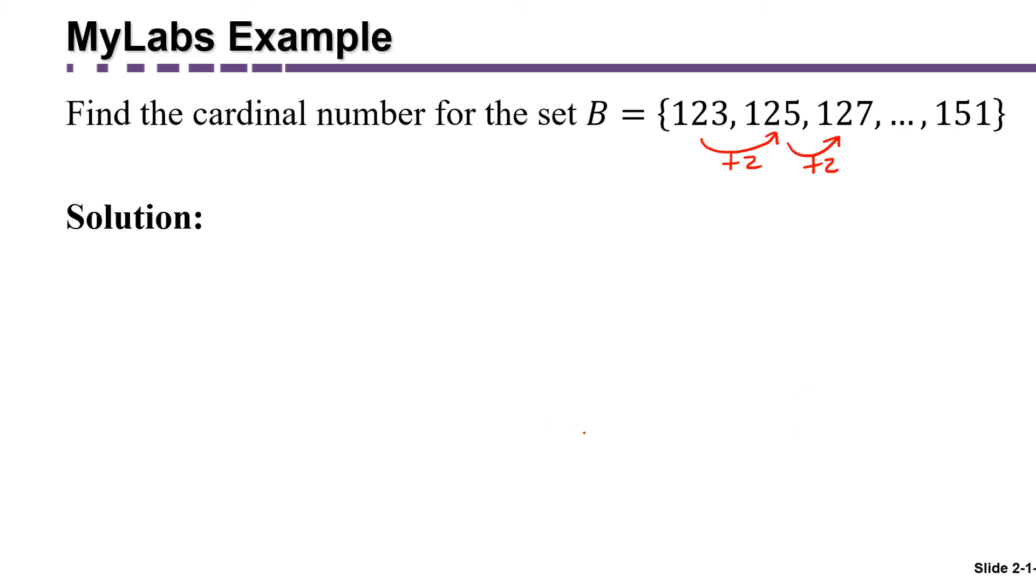So the technique that I'm going to show you is very similar to what we did on the previous slide, but notice that this time these numbers are odd numbers, which means we can't just divide it by two to make the comparison. So what we're going to do is compare this set to the set of all the numbers one less than these numbers. So we're going to compare it to the set containing one less than 123 is 122, one less than 125 is 124, one less than 127 is 126, all the way up to one less than 151 is 150. When you agree that these two sets have the same number of elements.